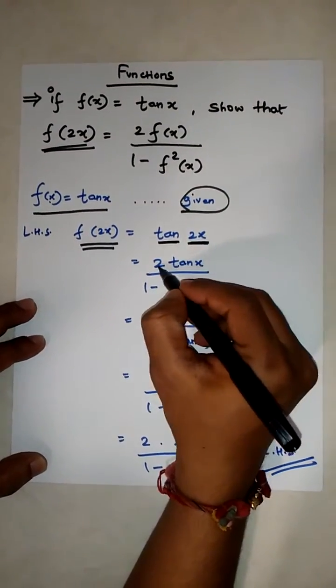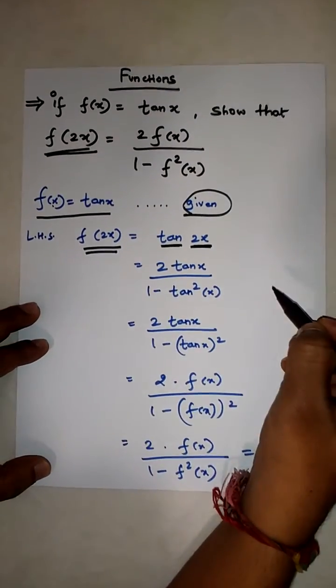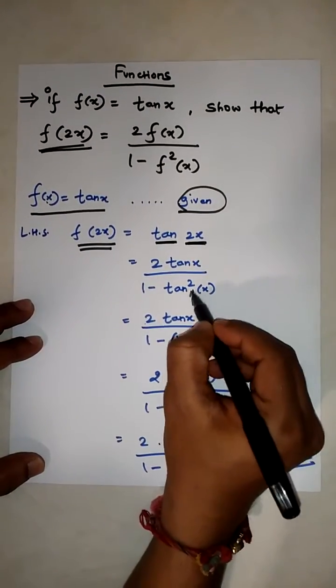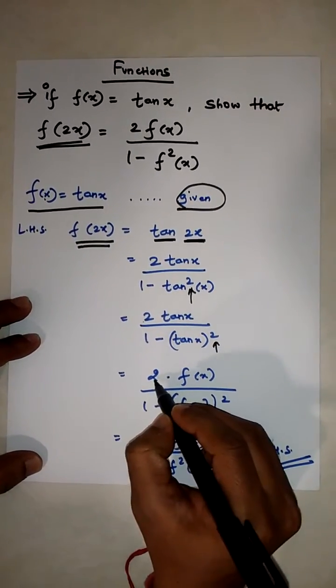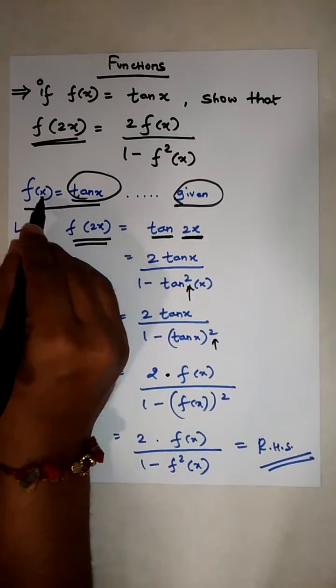With x, it will be 2tan(x) over 1 minus tan²(x), which equals 2tan(x) over 1 minus tan²(x). Taking 2 outside, this equals 2 into tan(x) over 1 minus tan²(x). Now, tan(x) is nothing but f(x).